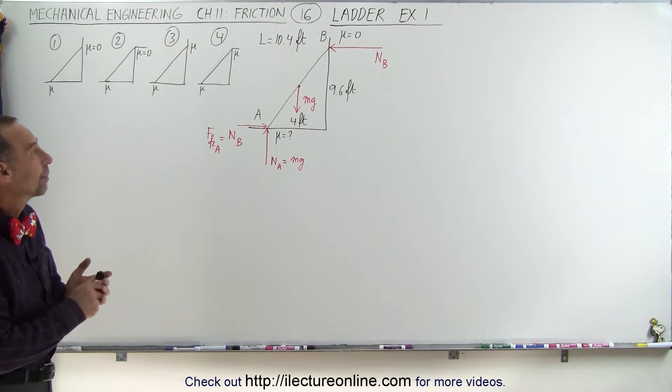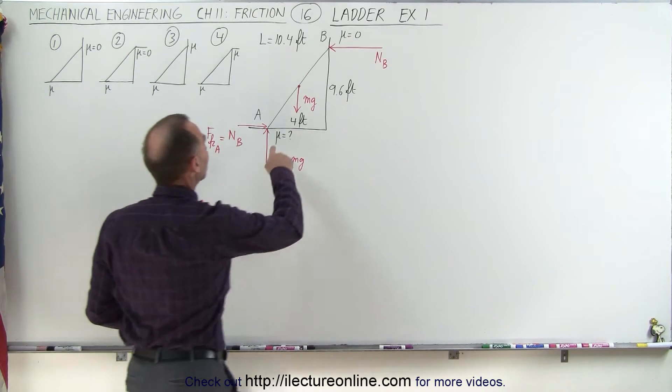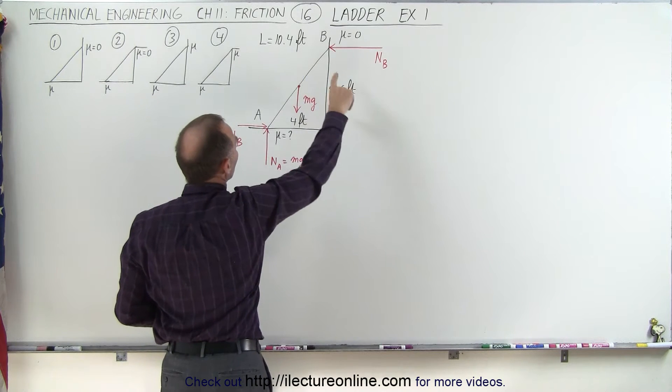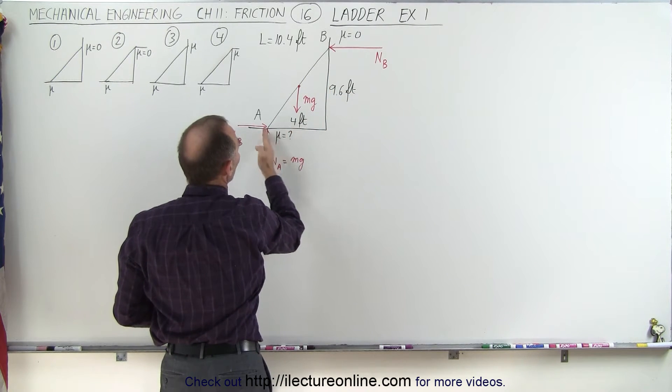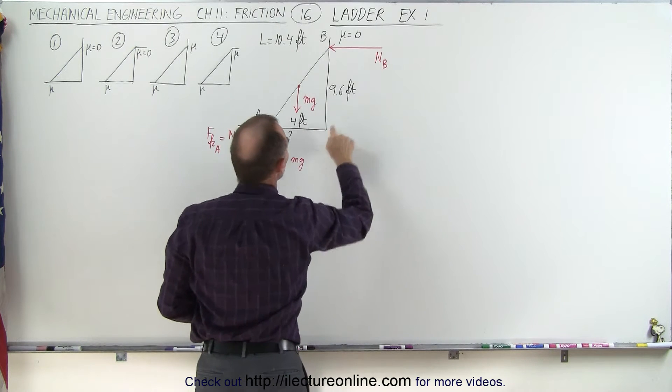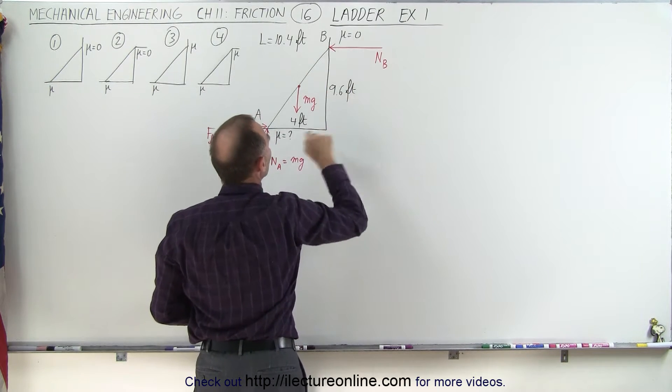So here we're starting with example one, where we have a ladder that is 10.4 feet long. We have the ladder four feet away from the wall and touching the wall 9.6 feet above the ground.